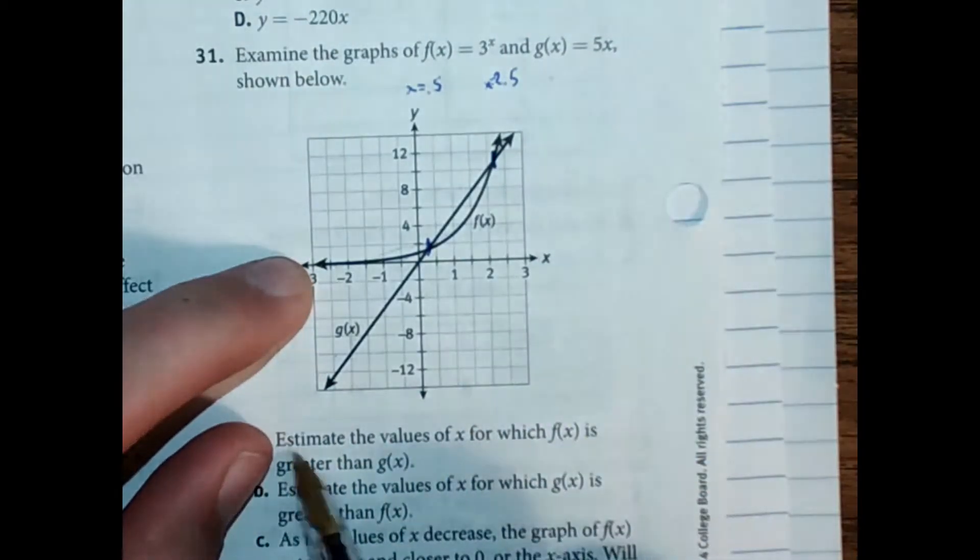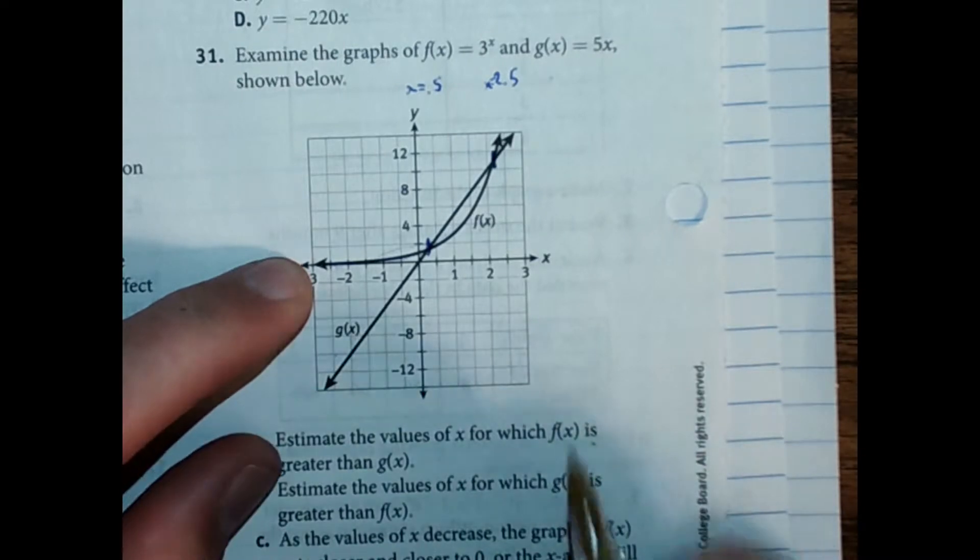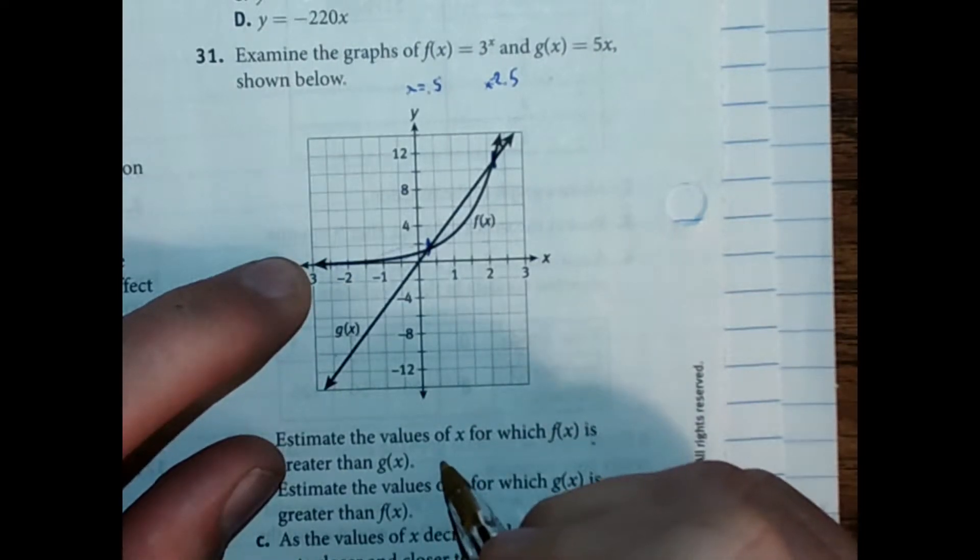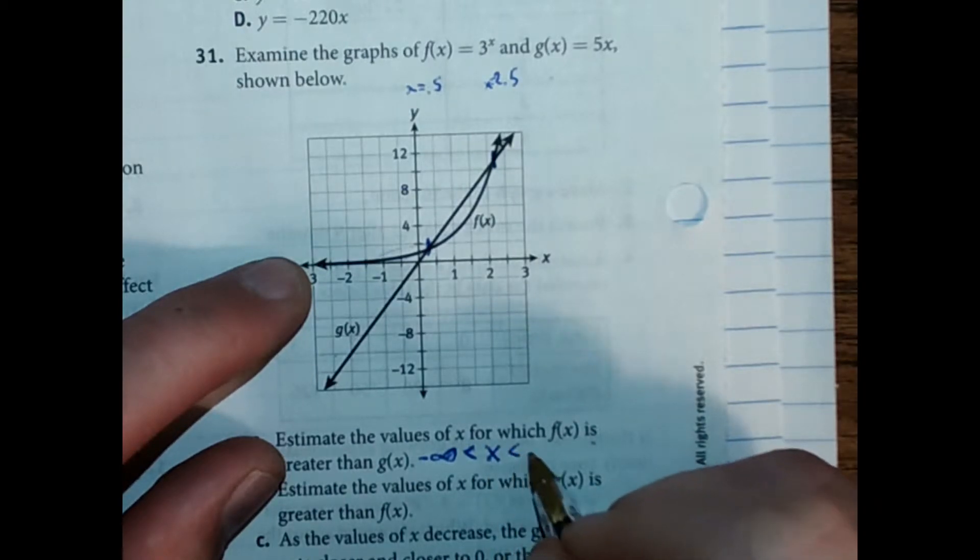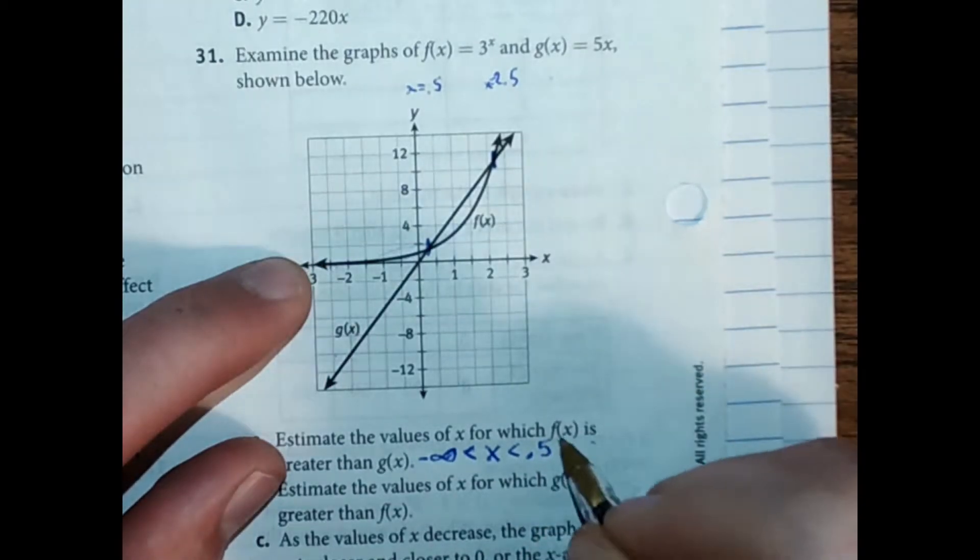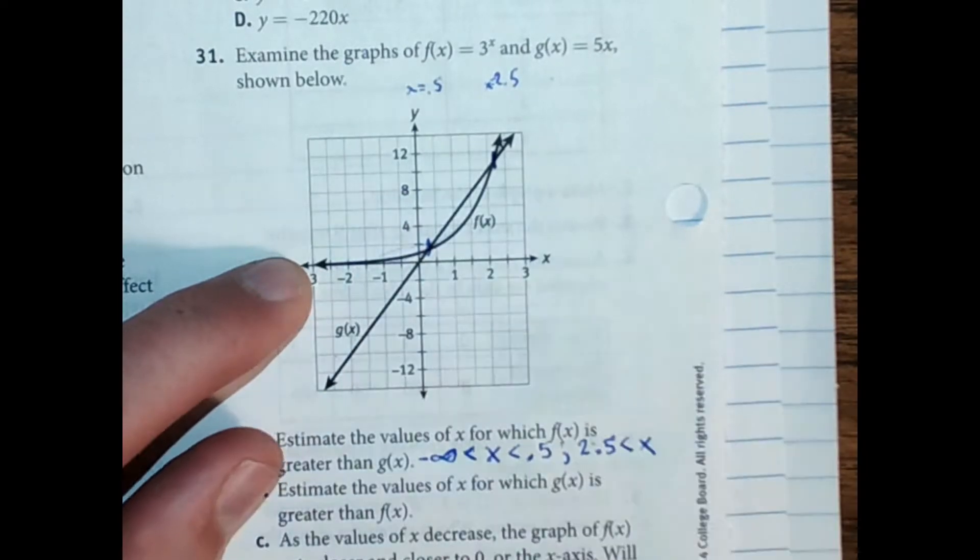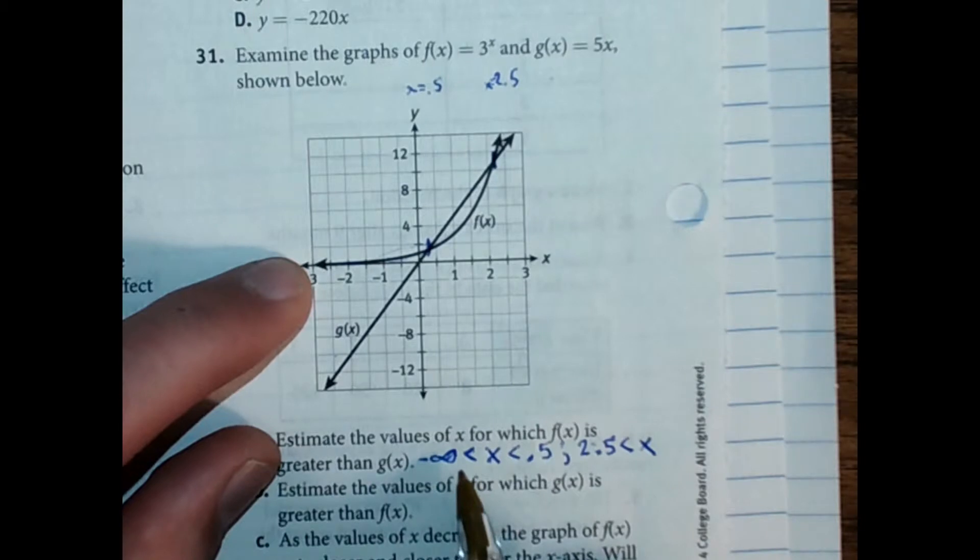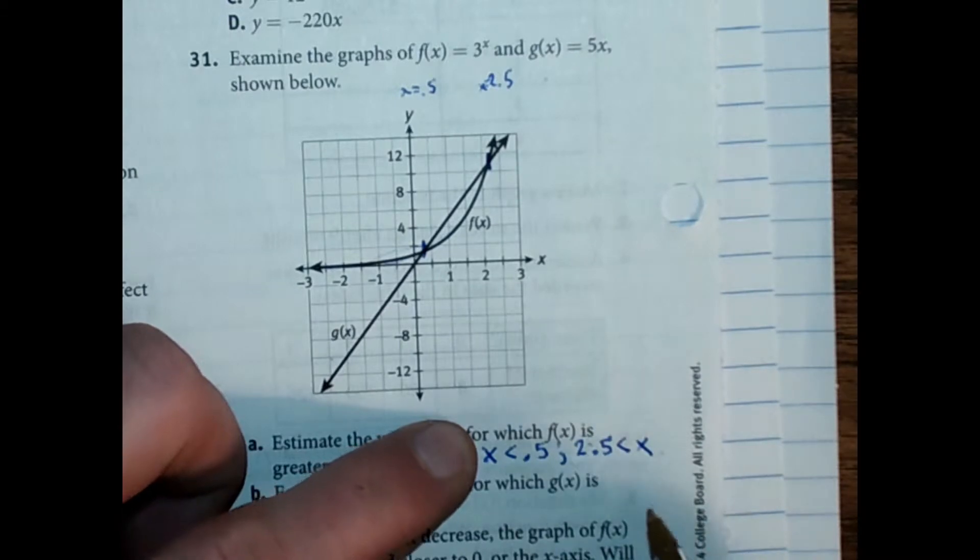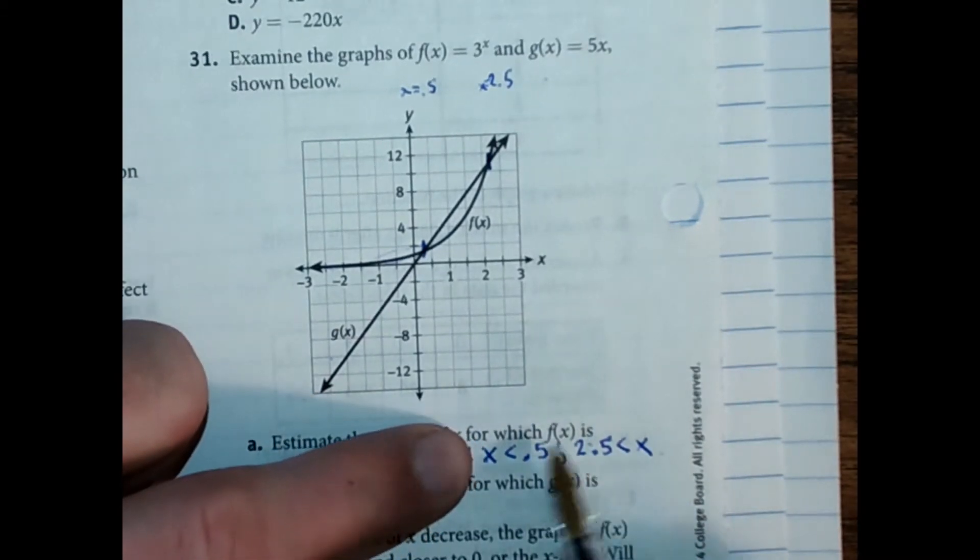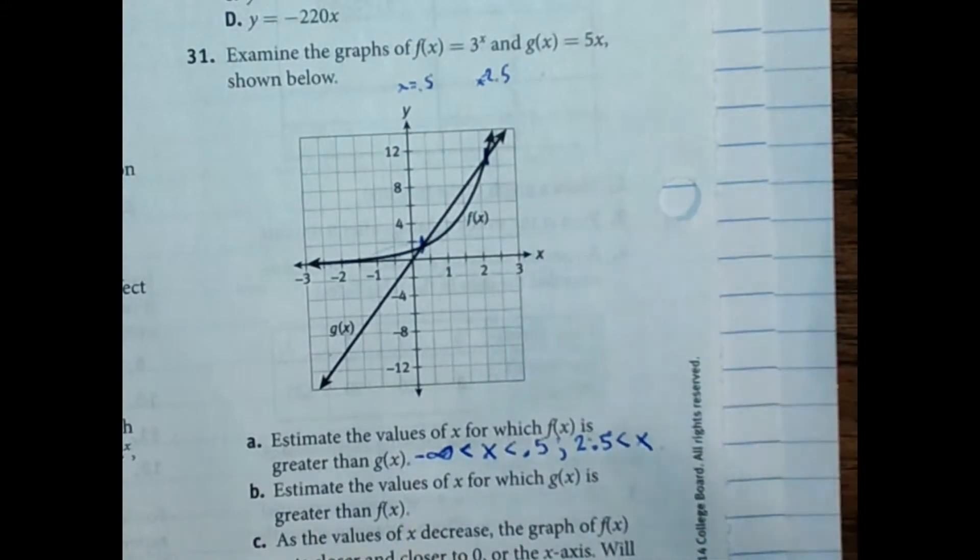So estimate the values of x for which f of x is greater than g of x. Everything from negative infinity to about like that, and then also x greater than 2.5. And you can even, you can leave this off. You can just say x less than 0.5 and x greater than 2.5. And inequality notation is nice, but if you just wrote me a little sentence explaining that, I would accept that too.